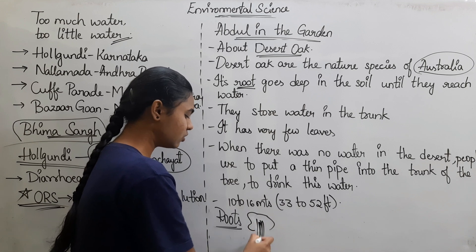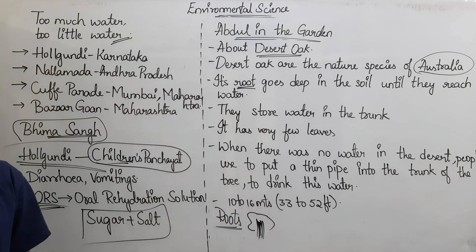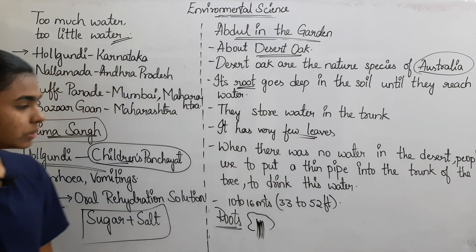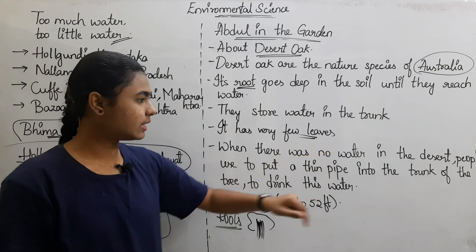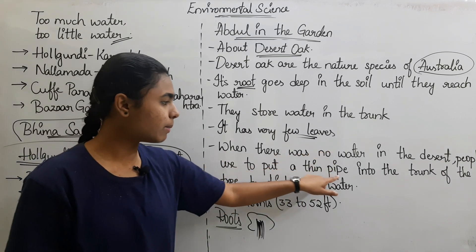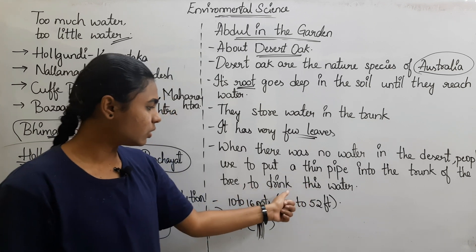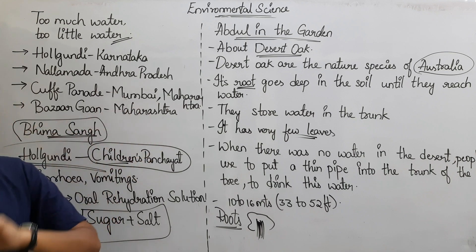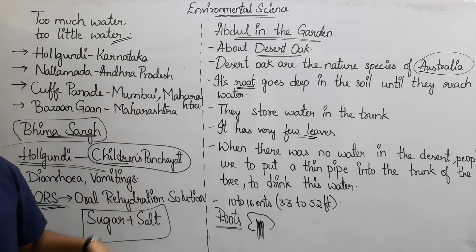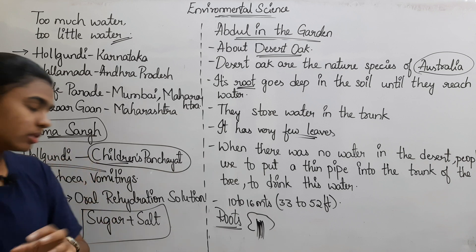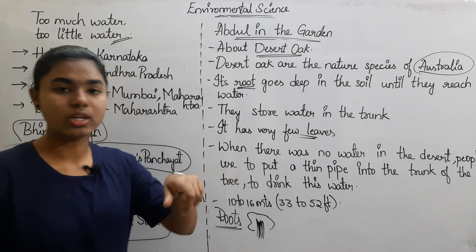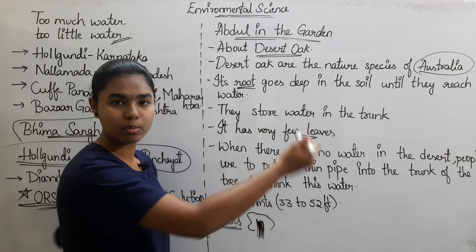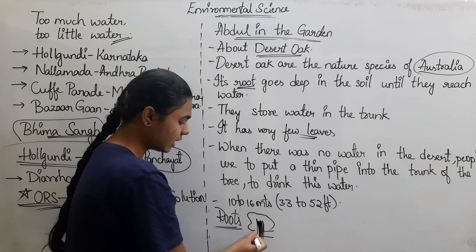The trunk stores water. It has very few leaves. When there was no water in the desert, people used to put a thin pipe into the trunk of the tree to access this water. The space around the roots is used efficiently, and that is why it has very few leaves.